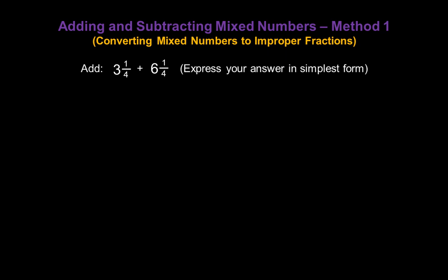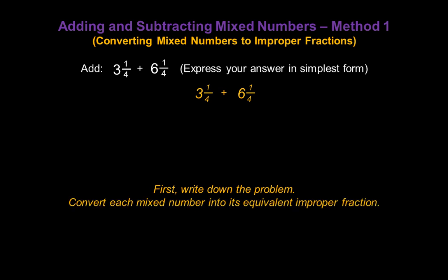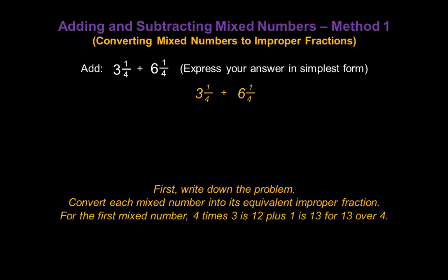Let's add three and a quarter and six and a quarter and express the answer in simplest form. We start by writing down the problem: three and one-quarter plus six and one-quarter. Now convert each mixed number into its equivalent improper fraction. For the first mixed number, we multiply the denominator four by the whole number three — four times three is twelve — then we add the numerator one to get thirteen.